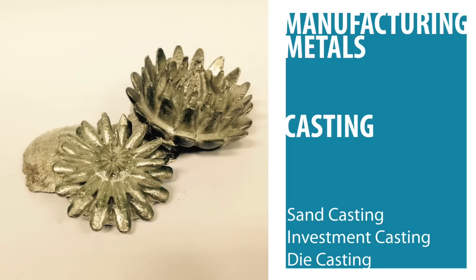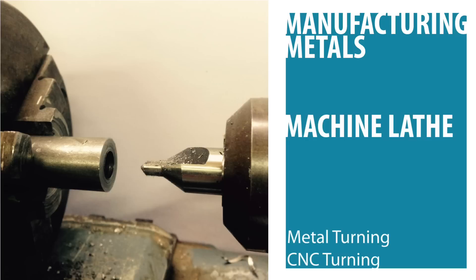As well as casting, you can machine metals using tools such as the metal lathe. The metal lathe allows you to turn metals to face-off, or flatten, materials, or bore holes into the surface.